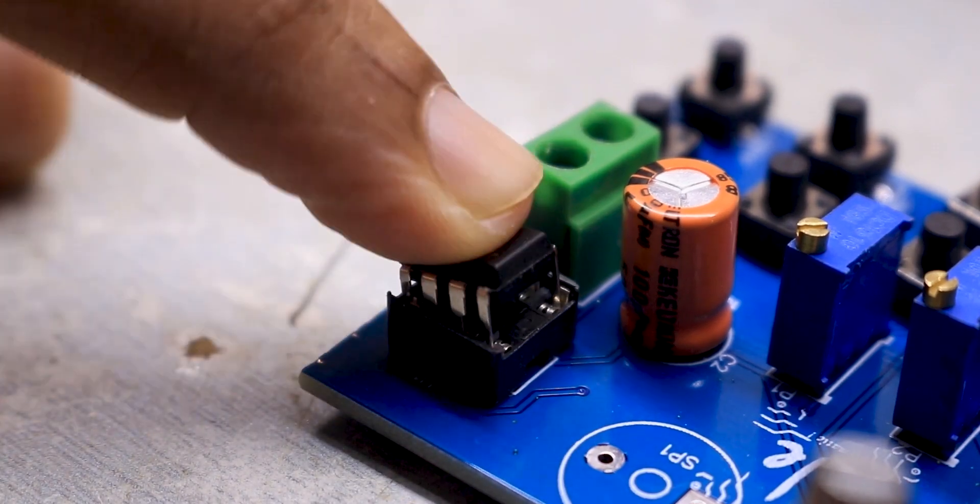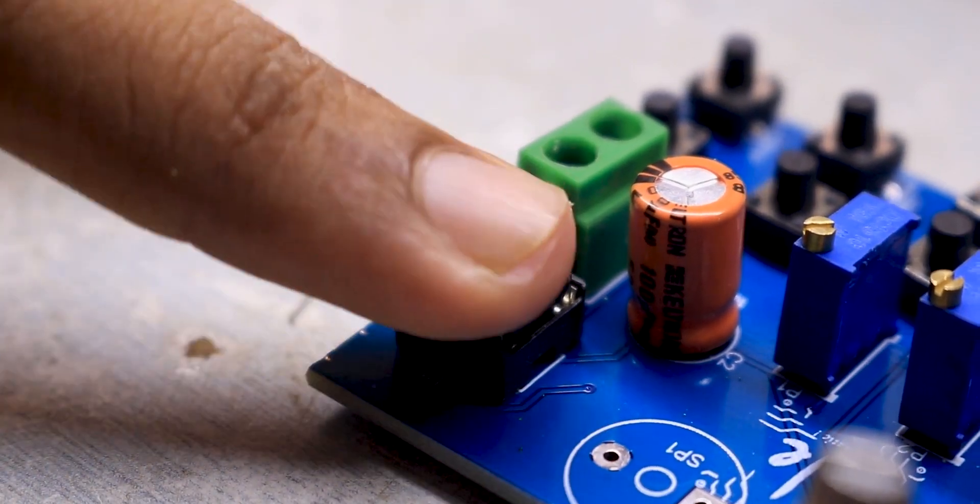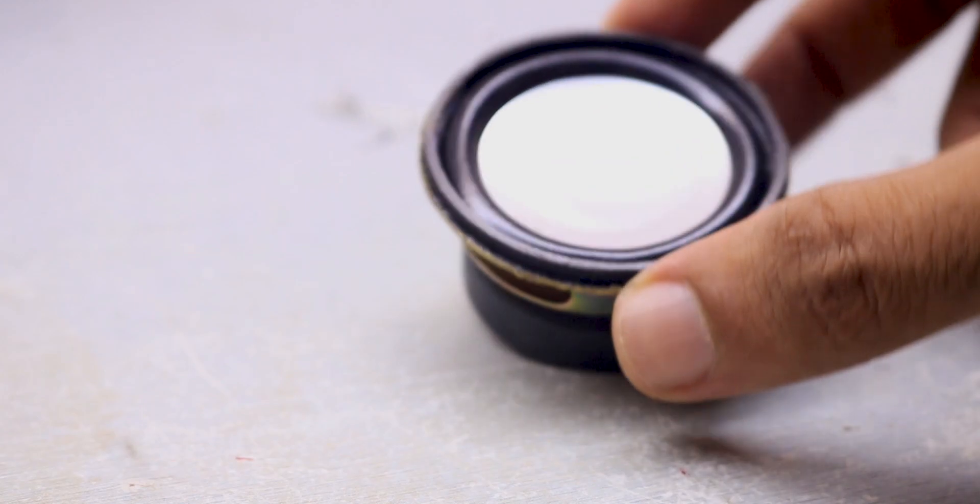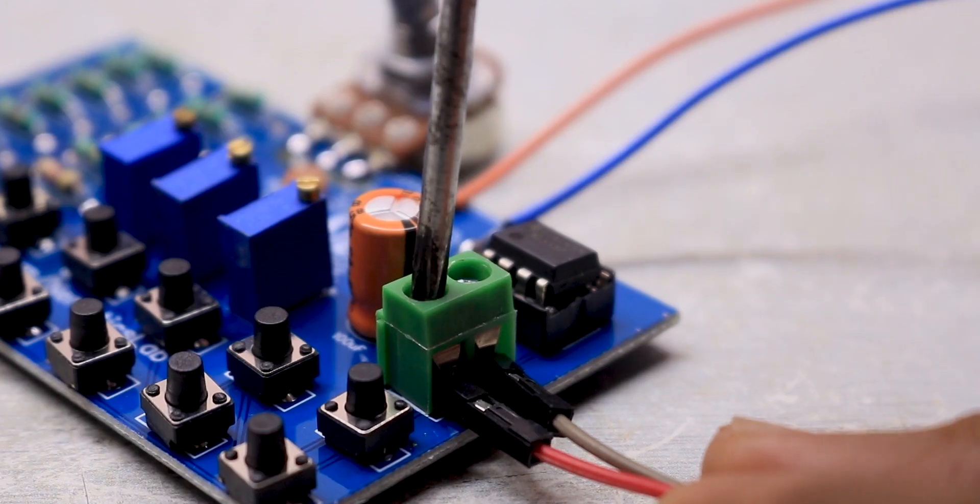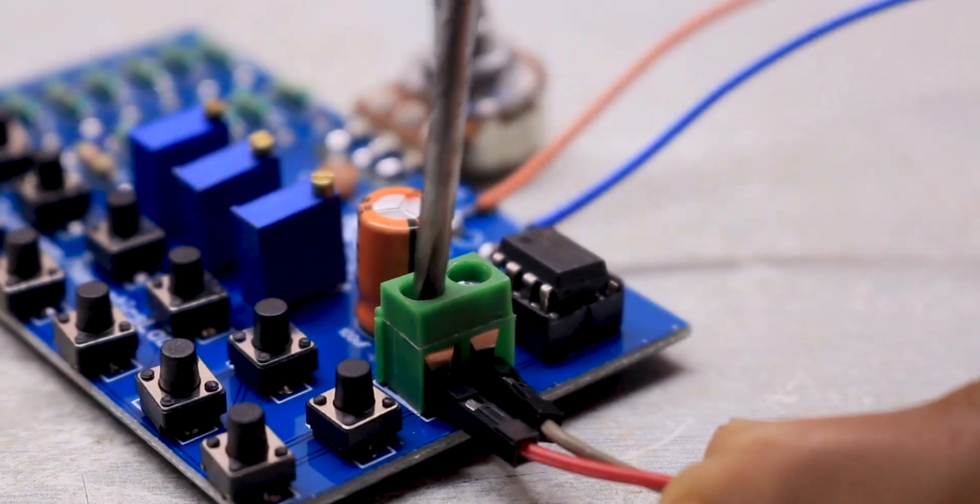Once soldering was complete, I inserted the IC555 timer into the socket and used this 4 ohm speaker, connected it to the circuit, and gave it 12 volt power supply. This project was complete.